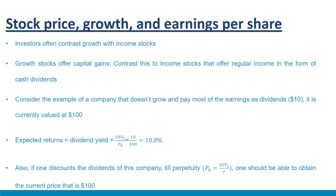If this no-growth company pays all its earnings as dividends amounting to $10 and is currently valued at $100, its expected returns can be computed as: expected returns = dividend yield = Div₁/P₀ = EPS₁/P₀. Here EPS₁ is earnings per share, and expected returns = 10/100 = 10%. This is the rate of return expected by shareholders. Also, discounting dividends to perpetuity — P₀ = Div₁/R — should give the current price of $100.